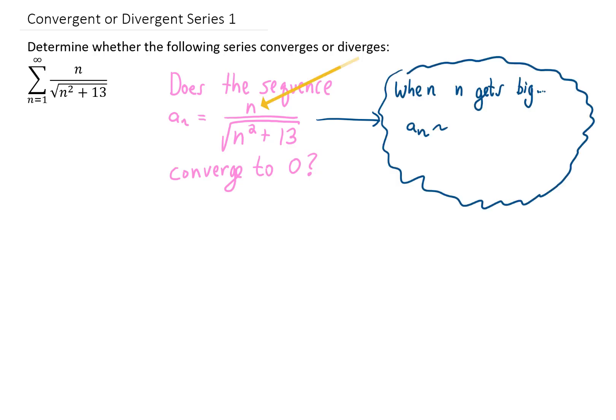To do that, we can look at the highest power in the numerator and the highest power in the denominator. When n gets big, our sequence behaves kind of like n over the square root of n squared. Well that's just n over n, which is just one.